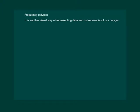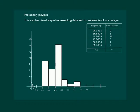There is yet another visual way of representing quantitative data and its frequencies. This is a polygon. Let us learn what is frequency polygon. To see how frequency polygon is drawn, let us consider the following histogram.